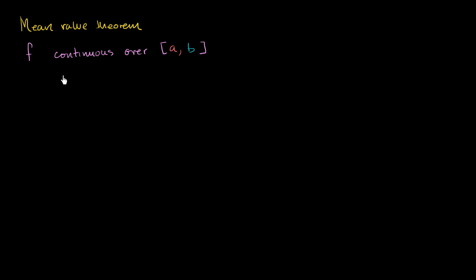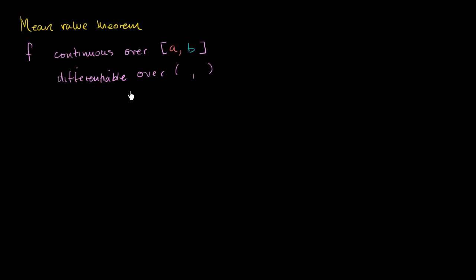Now let's also assume that it's differentiable over the open interval between a and b. It's okay if it's not differentiable right at a or right at b. Differentiable just means that there's a defined derivative — you can actually take the derivative at those points. So those are the constraints we're going to put on ourselves for the mean value theorem.